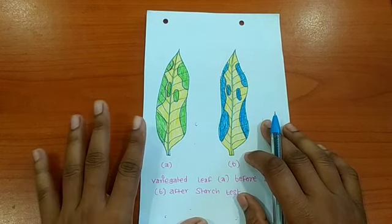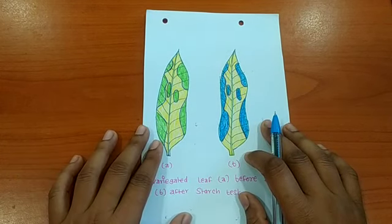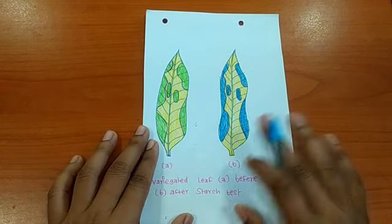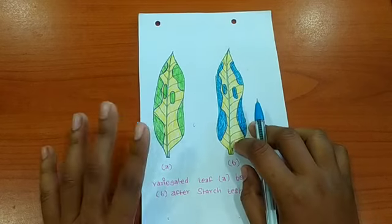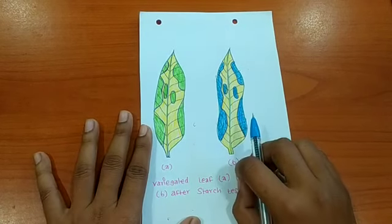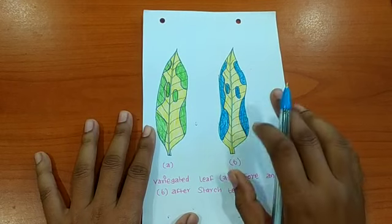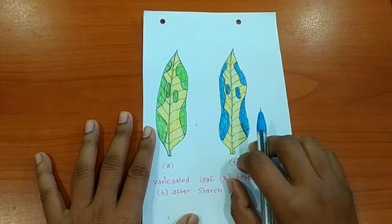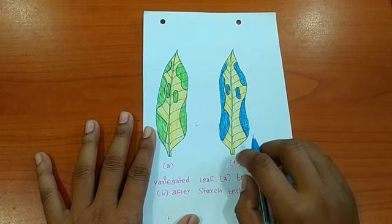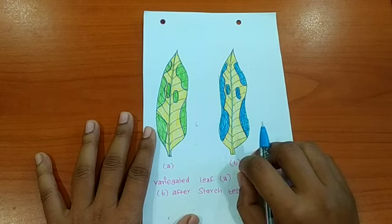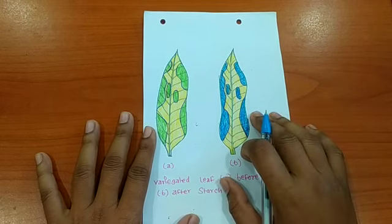Here we have taken a potted plant with variegated leaves, kept that plant in the dark room where no light is present at all for about 3 to 4 days so that all the starch present in the leaves is used up very well. Now, took that plant out of the dark room and kept in sunlight for about 6 hours.